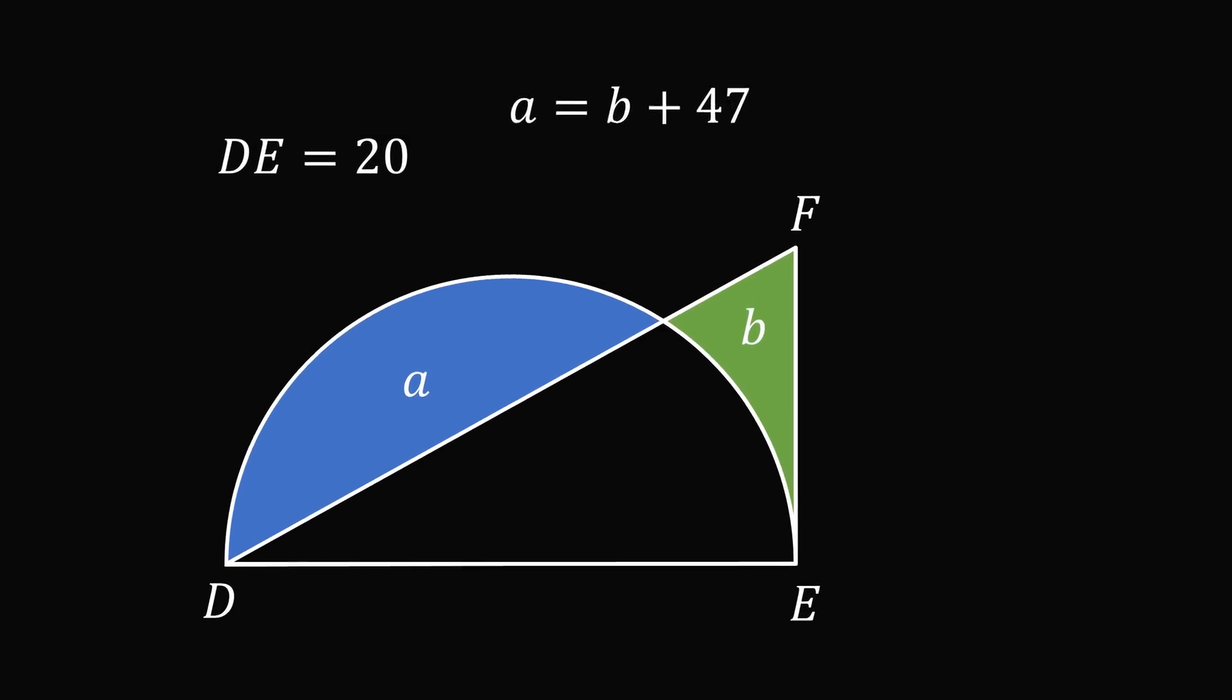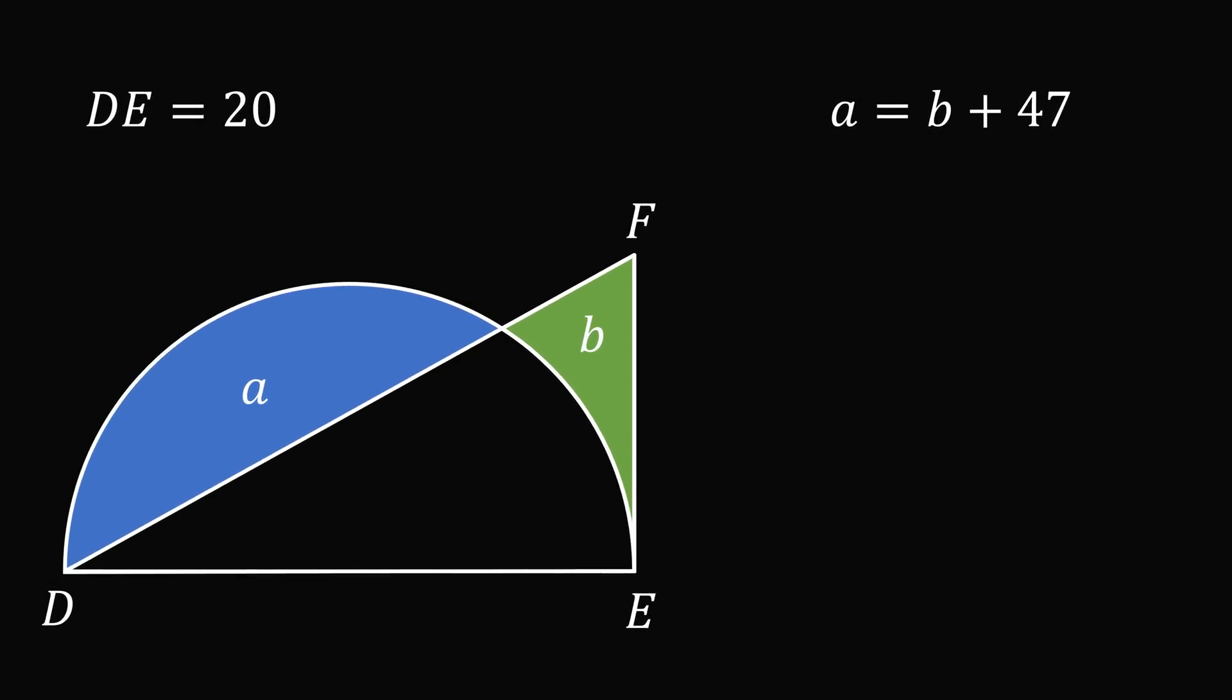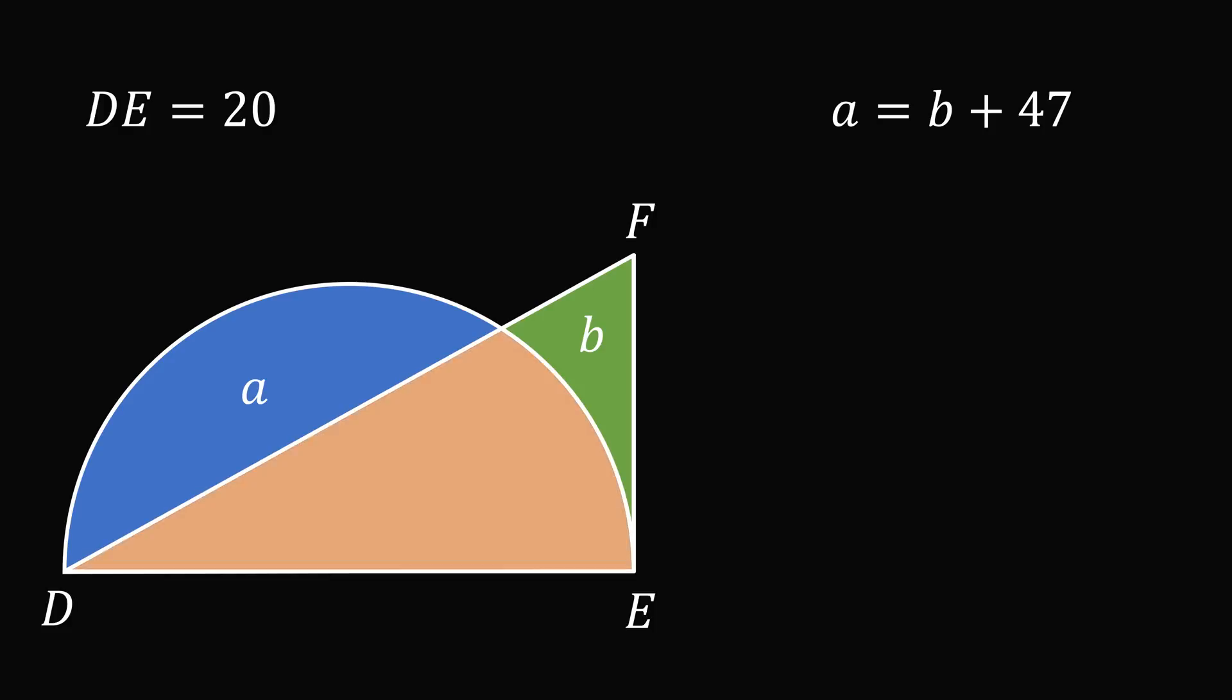There's a very neat trick to solve this problem. Consider the third region where the semicircle and the right triangle overlap and suppose it has area C. To the equation A is equal to B plus 47, add the area C to both sides. We now have A plus C is equal to B plus C plus 47.